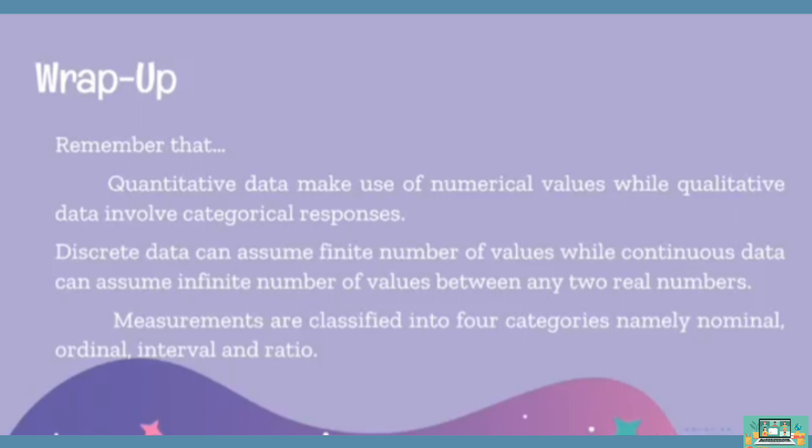Always remember that quantitative data make use of numerical values while qualitative data involve categorical responses. Discrete data can assume finite number of values while continuous data can assume infinite number of values between any two real numbers. Measurements are classified into four categories, namely nominal, ordinal, interval, and ratio.